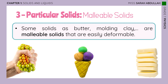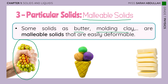What we need to remember: the first type of particular solids is malleable solids. Some solids, like butter, molding clay, or any squishy toy you have, are malleable solids that are easily deformed.